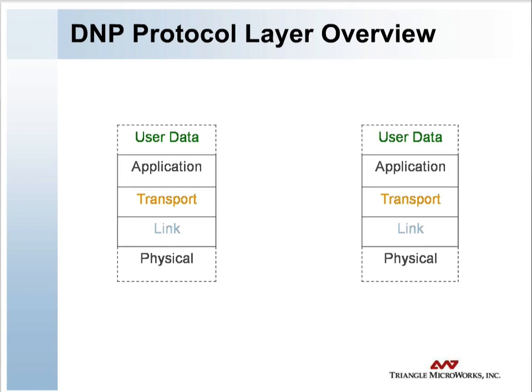DNP-3 is a layered protocol. However, rather than adhering to the OSI, or Open System Interconnection, seven-layer protocol, DNP-3 adheres to a simplified three-layer standard proposed by the IEC, the International Electrotechnical Commission, for more basic implementations. IEC calls this the Enhanced Performance Architecture, or EPA.